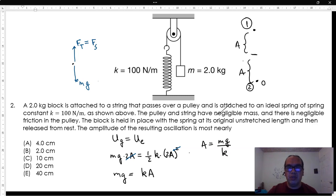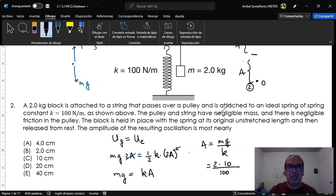That is equal to 2.0 kg times 10 meters per second squared divided by 100 N per meter, which is 0.20 meters or 20 centimeters.